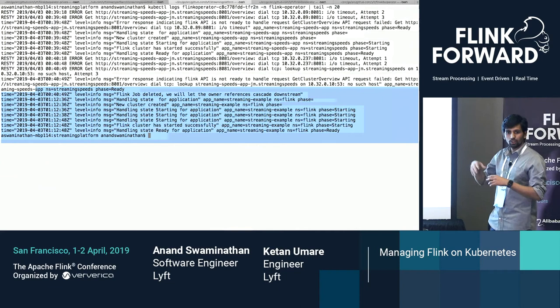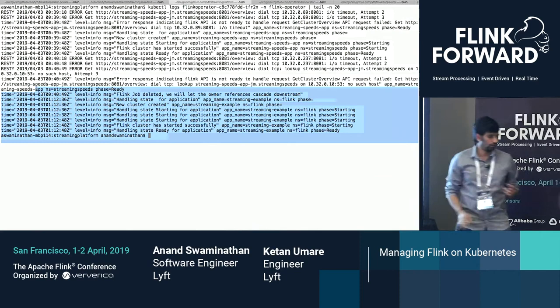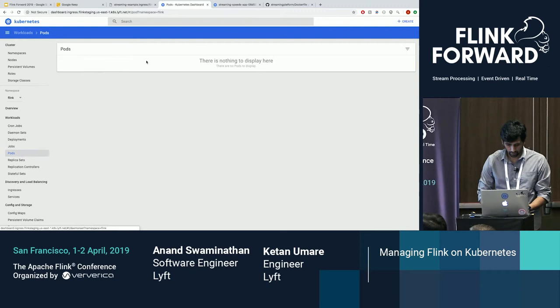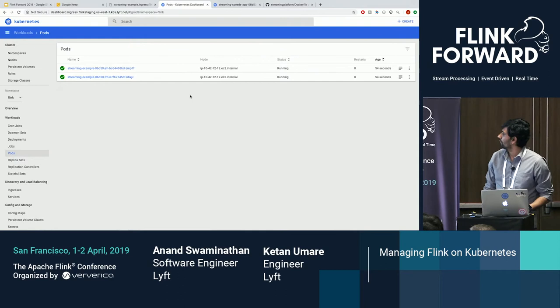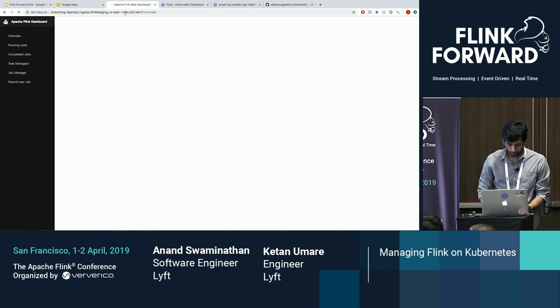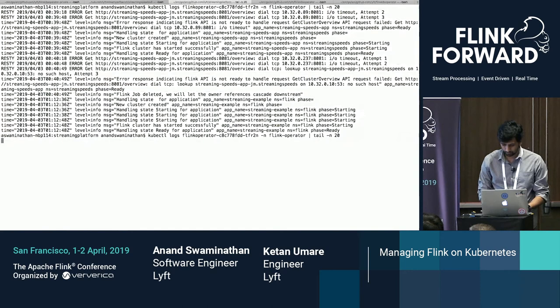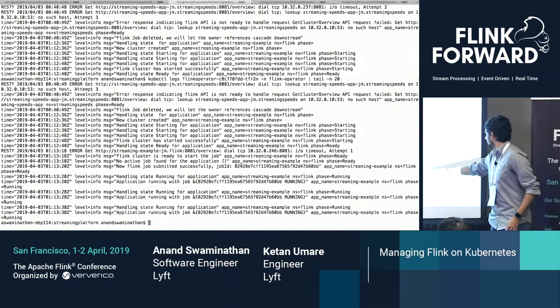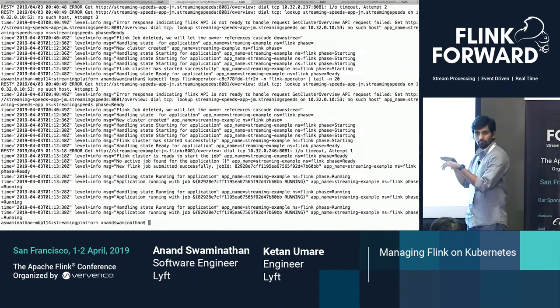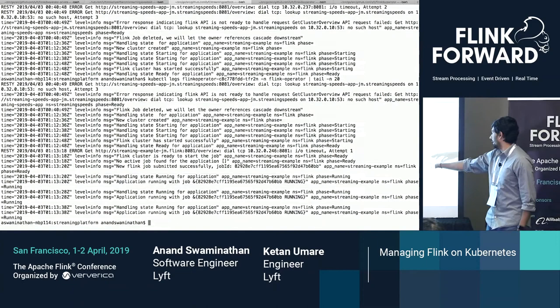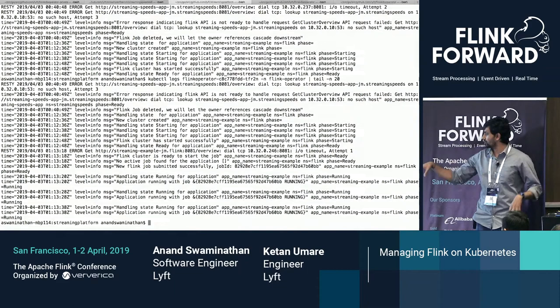Once the pods are coming up, the operator pushes to ready state. We can see all of this in the Kubernetes UI, which is pretty cool. Now you can see that since all the pods are up, the operator submitted a job based on what is specified in the CRD — here is the job ID — and the operator is continuously monitoring if the CRD matches what is running in the cluster.